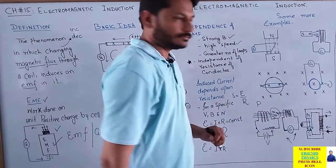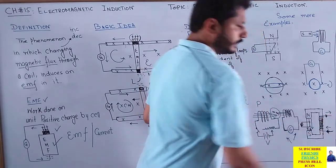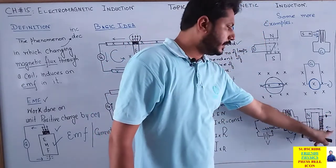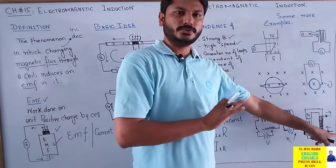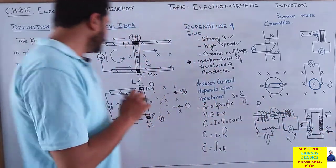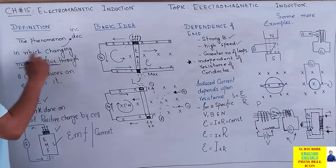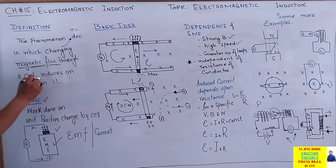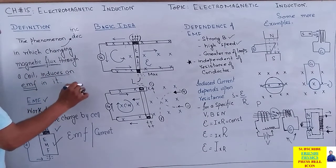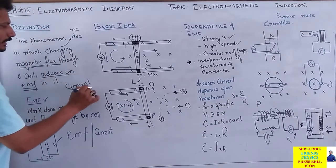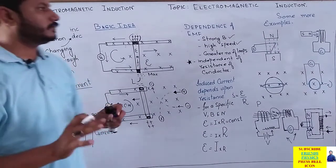اور finally: نہ coil move کریں، نہ magnet move کریں — ایک electromagnet لیں، current enter کریں، current leave کریں، صرف current کی concentration کو کم زیادہ کریں۔ تو automatically magnetic field change ہوگی، magnetic field change ہوگی تو magnetic flux change ہوگا، changing magnetic flux will induce an EMF, and it will also induce a current in it۔ So that's all about electromagnetic induction — basic idea۔